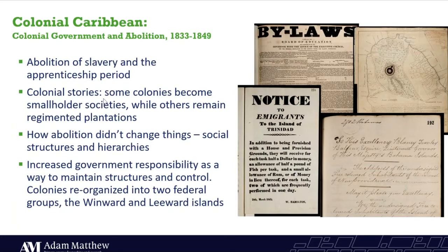Focusing in now on module two: those of you who know module one will know that it covered nearly 200 years of Caribbean history, whereas this second module is really zooming in on just a 16-year period. In particular, we're looking at the abolition of slavery, which came into effect in 1834. While abolition came into effect in 1834, slavery carried on de facto until 1838 under the apprenticeship scheme, whereby former enslaved people were forced to continue working without compensation. This amounted to essentially a continuation of slavery.